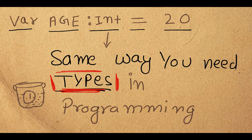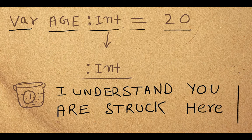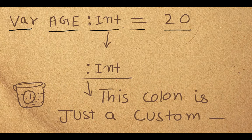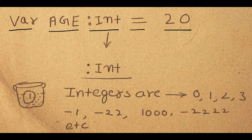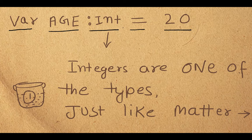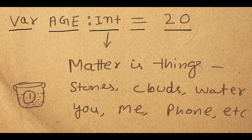Same way we need types in programming to make things easy for us. After all, programming is made by humans and for humans, so we have simplified things for our use. If you are stuck, please rewatch. Now, you might be wondering what the colon is doing here — it is just a formality, a custom that everyone follows. Int means integer — whole numbers. Integer is one of the types, just like matter has three types: solid, liquid, gas. But data in programming has more types — sometimes we need whole numbers, sometimes text, sometimes fractions.